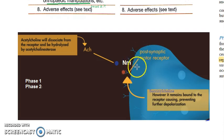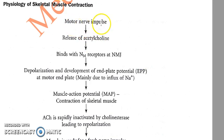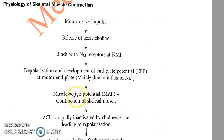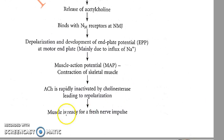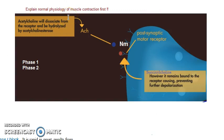After depolarization, there is end-plate potential — that is when the muscle contracts. Nerve impulse leads to acetylcholine release, which binds to the nicotinic receptors. There is depolarization and development of end-plate potential at the motor end-plate, with influx of sodium ions. There is a muscle action potential and contraction of the skeletal muscle. Then acetylcholine is inactivated by cholinesterase, leading to repolarization of the neuromuscular junction. The muscle is then ready for nerve impulses again.